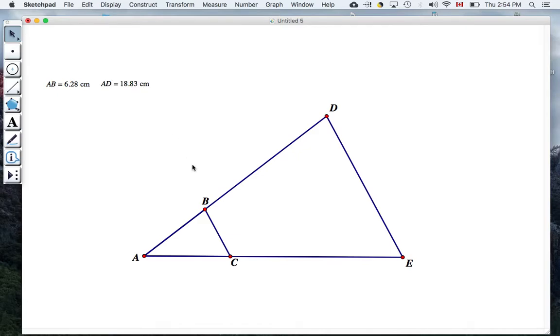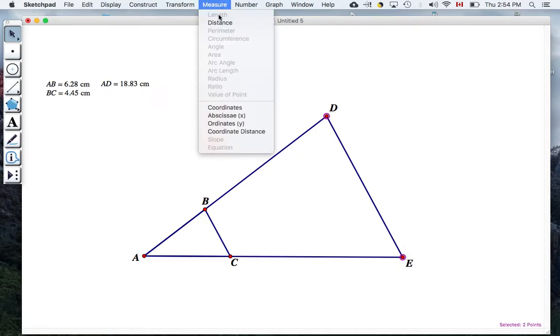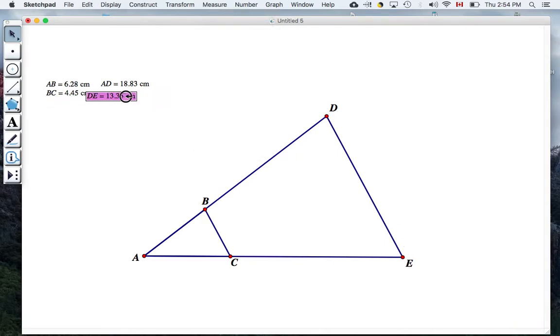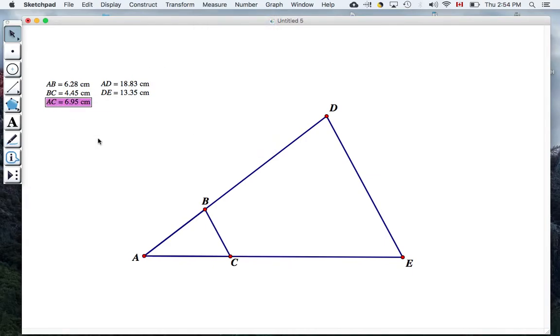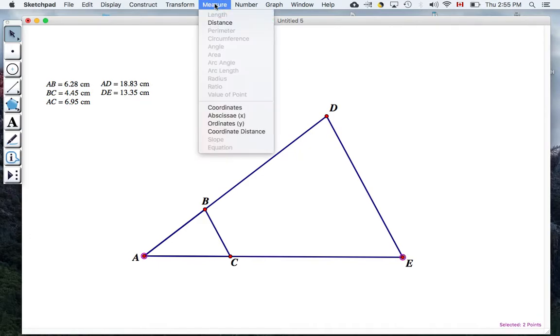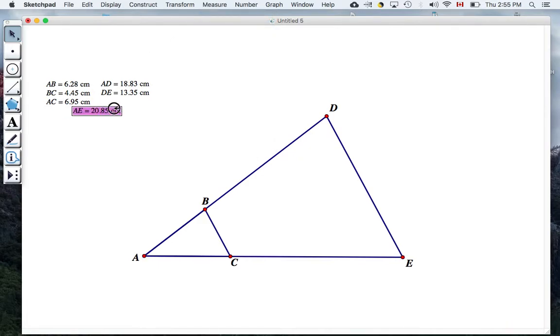Now I'm going to do the same for BC. So I'll select B, C, measure its distance. And I'll select D, E, measure that distance. And I need to measure AC and last AE. Okay.